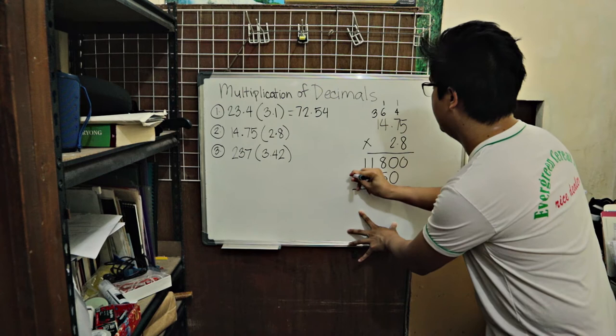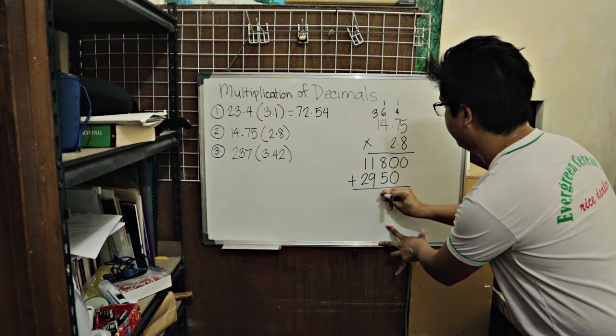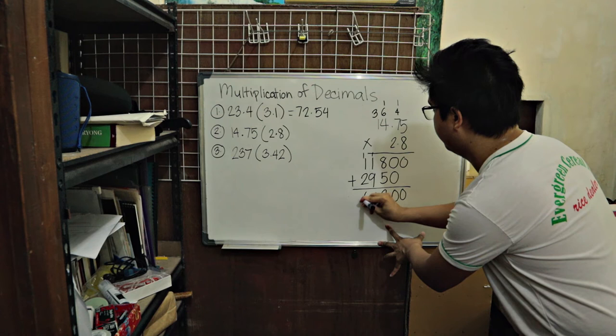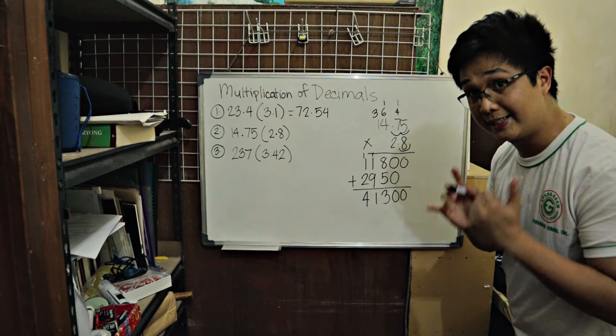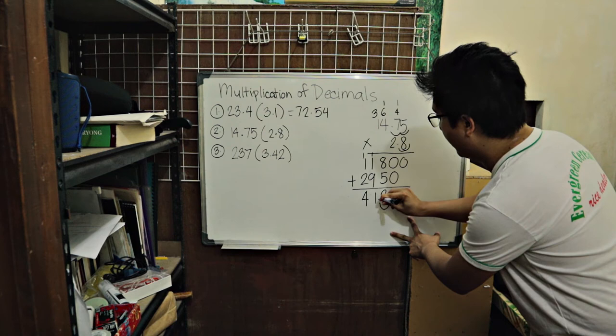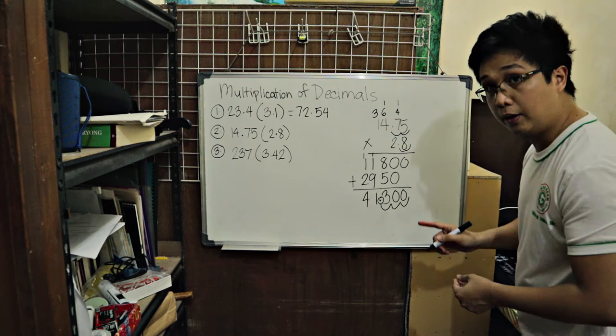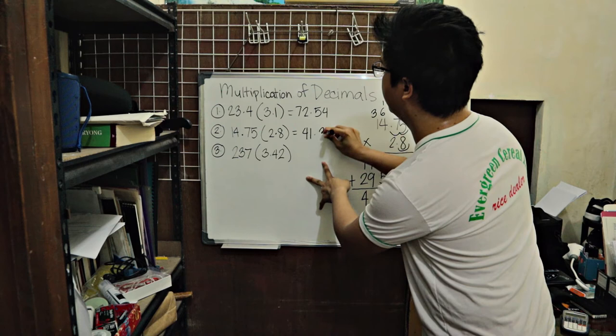And then we're just gonna add this one. So 0. Bring down. 8 plus 5 is 13. Carry 1. 10 plus 1. 11. Carry 1. That's 4. 4, 1, 3, 0, 0. And then we have how many decimal places? 1, 2 sa babaw. And 1 sa dalong. 2 plus 1 is 3. So we will move 3 decimal places. 1, 2, 3. Our answer is 41.300. Or just 41.3. Or 41 and 3 tenths.